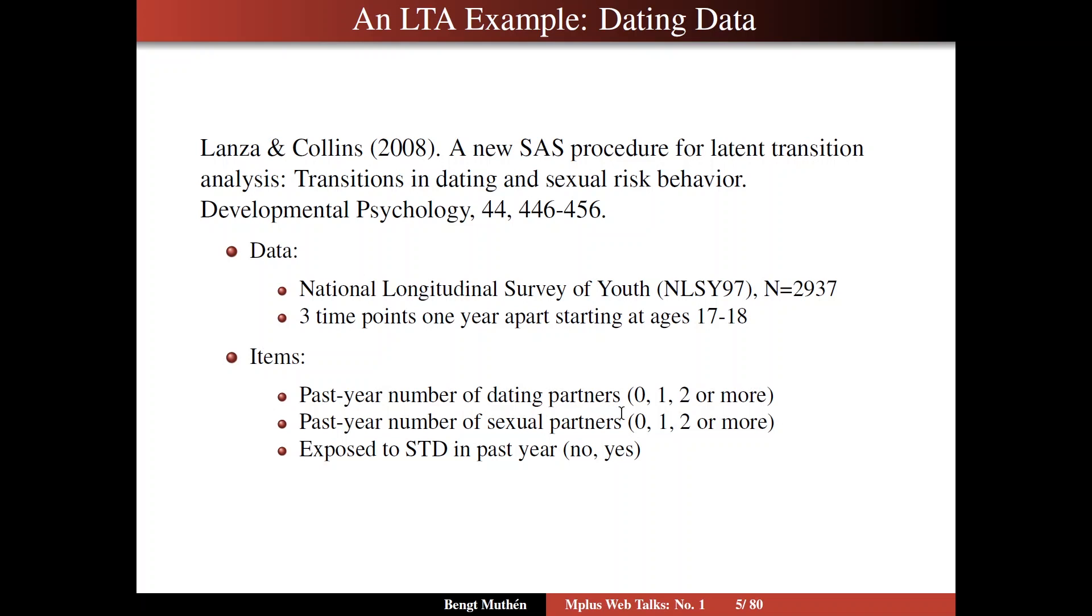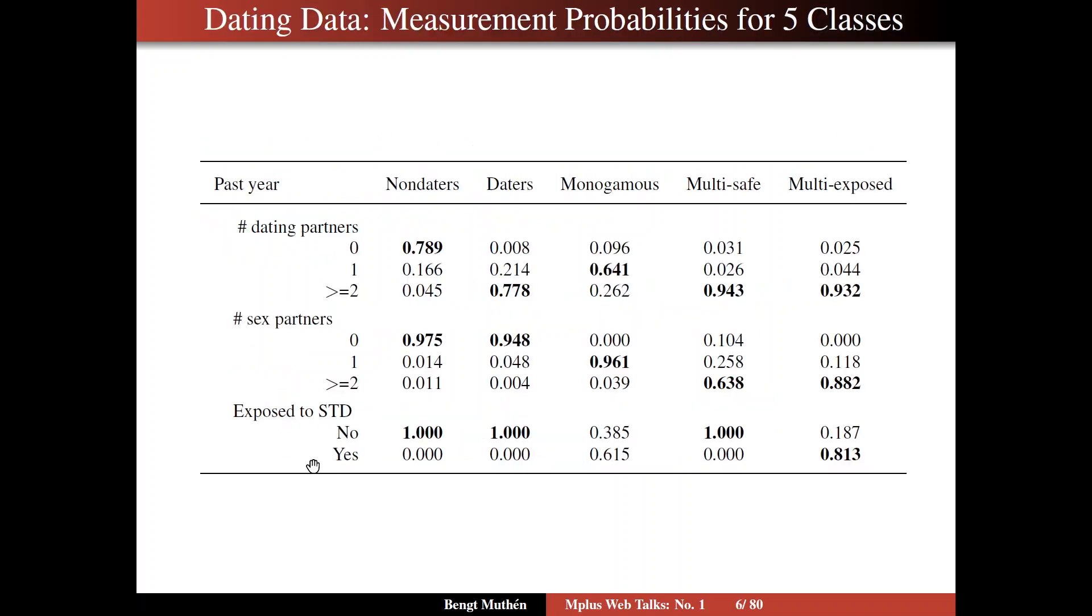So we're looking at past year number of dating partners, and here's an ordinal variable with three categories, zero, one, two or more. Three categories also for past year number of sexual partners, and then we have a binary variable indicating whether or not you've been exposed to sexually transmitted diseases.